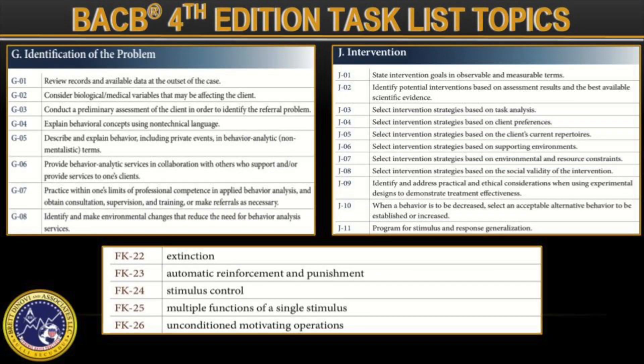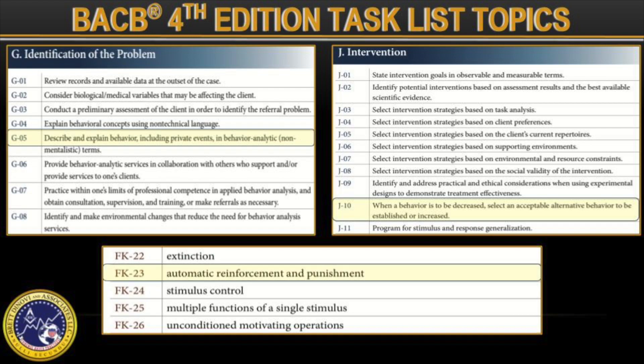The task list topics this covers are G05, describe and explain behavior including private events in behavior analytic non-mentalistic terms; J10, when a behavior is to be decreased, select an acceptable alternative behavior to be established or increased; and FK23, automatic reinforcement and punishment.